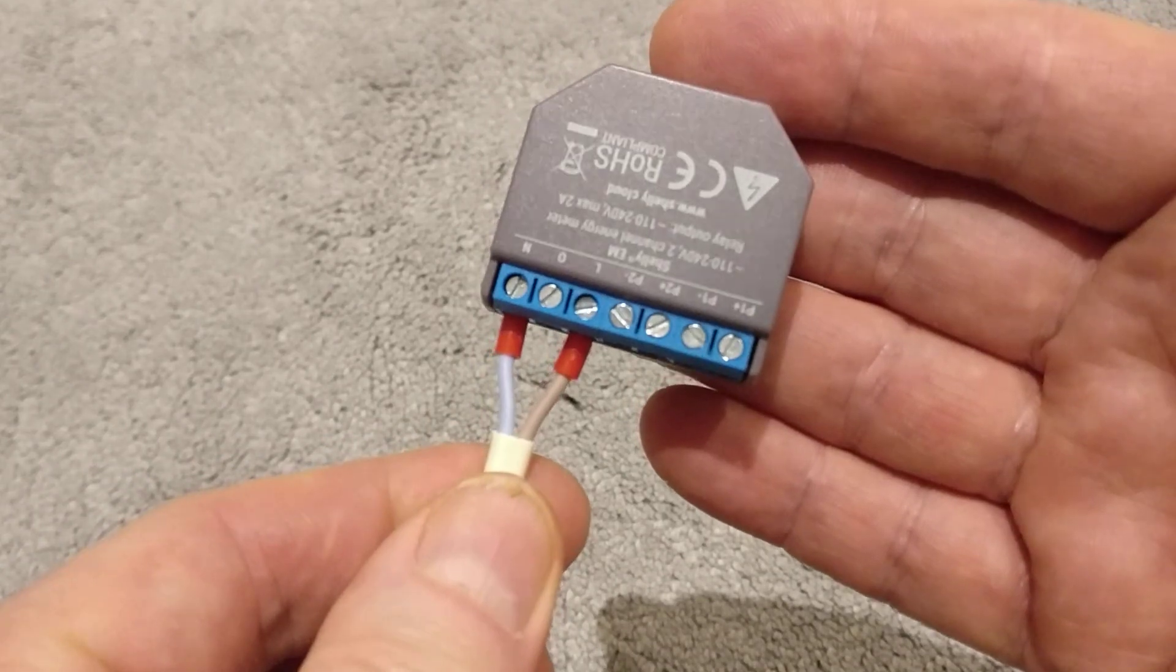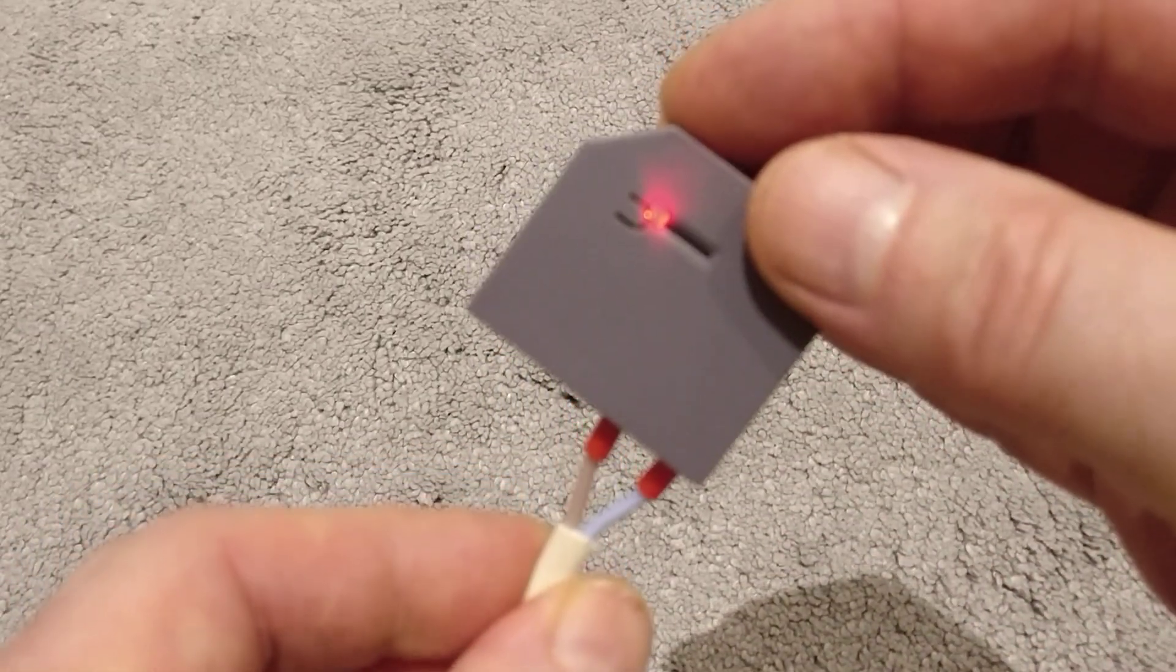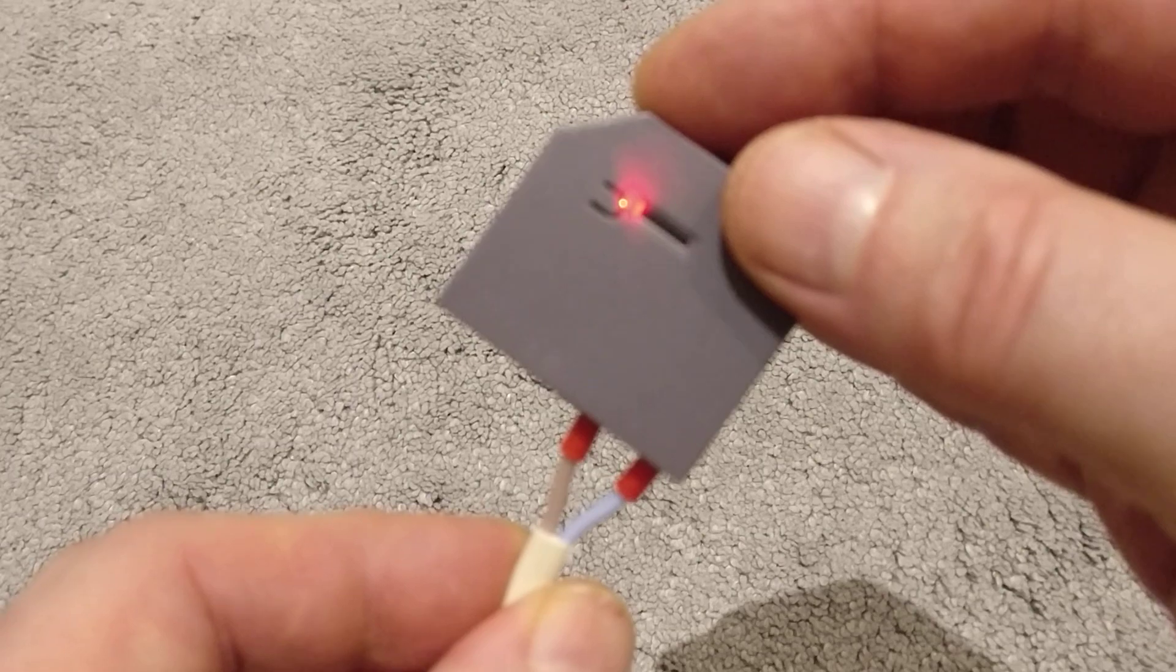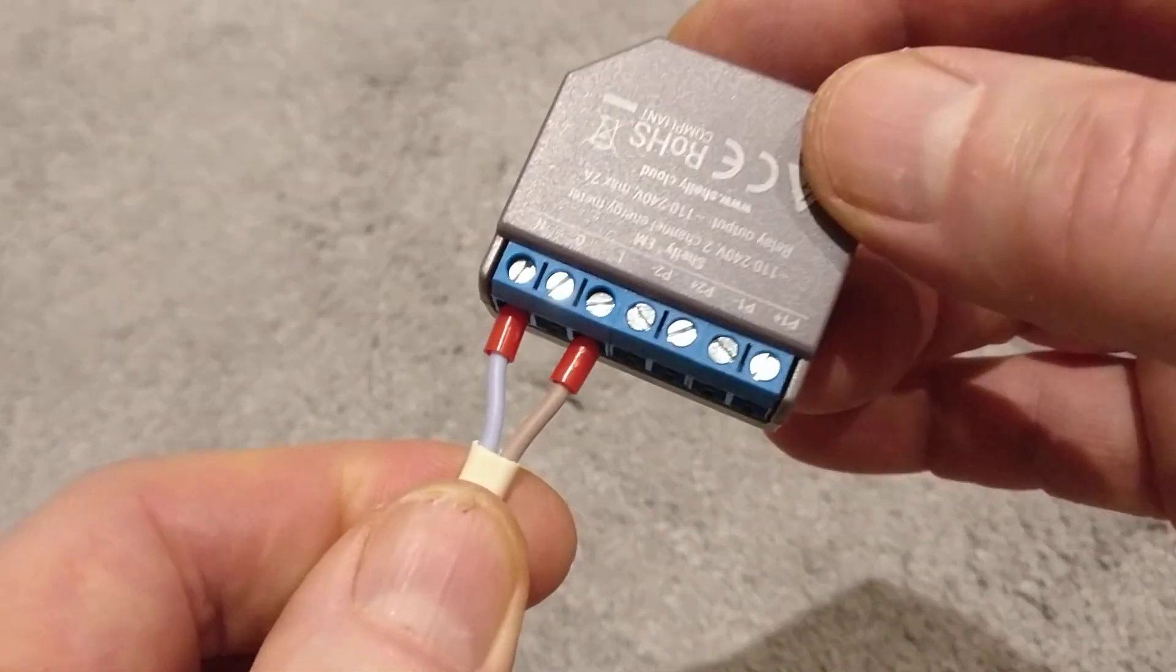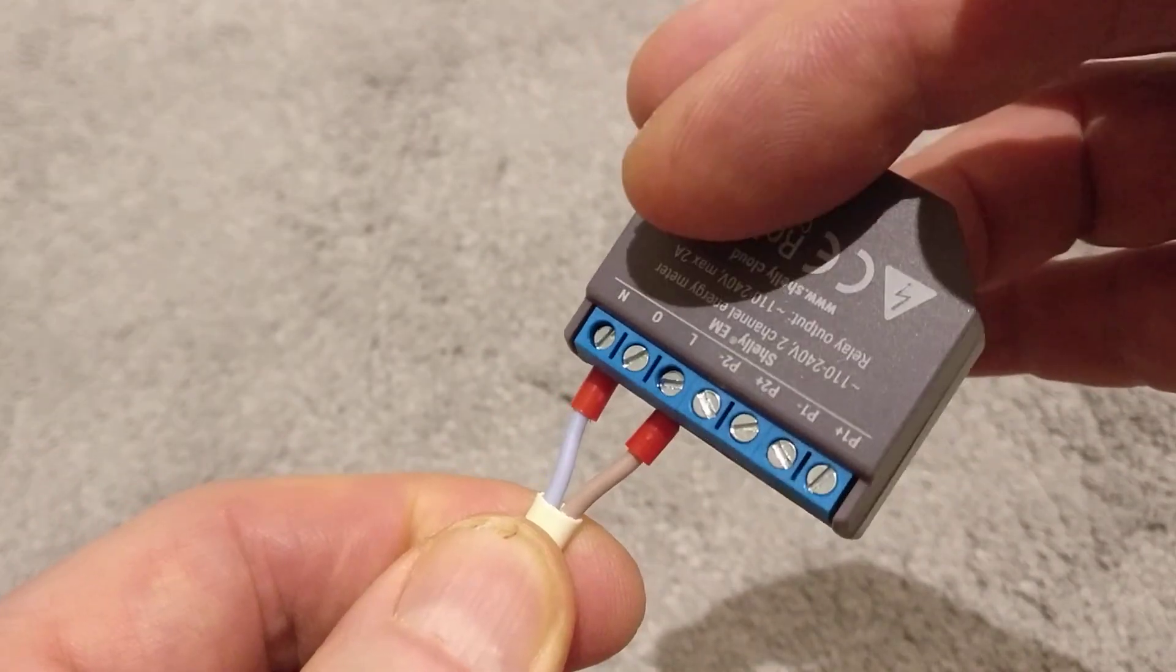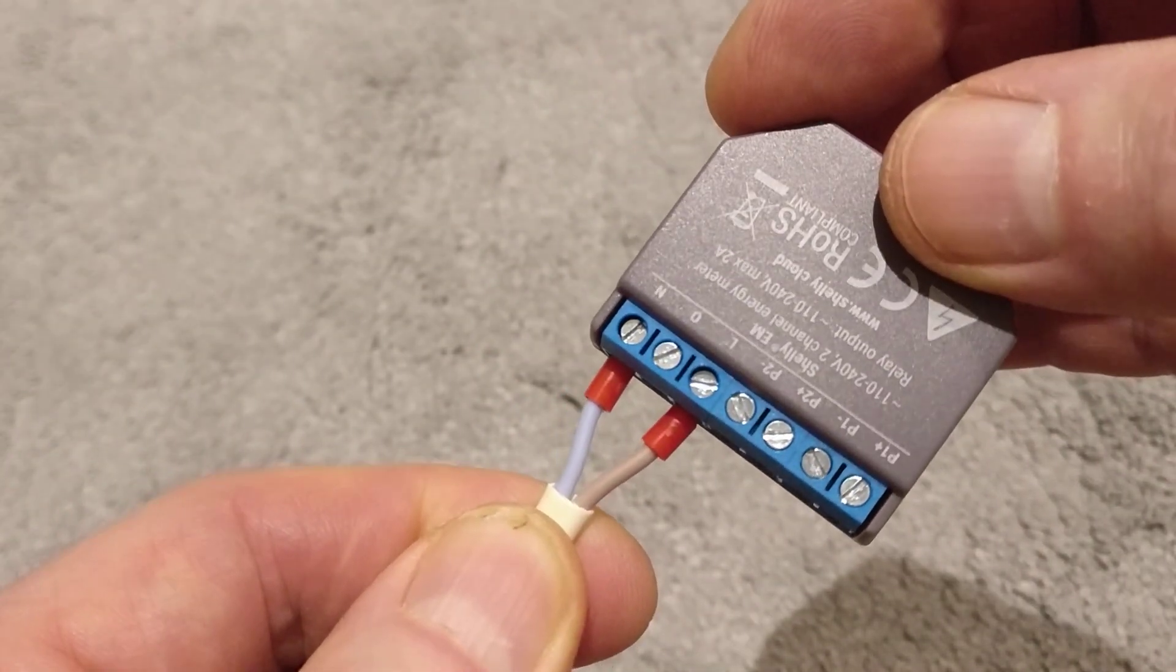The red light shows it's powered on and waiting to connect, or for you to connect to its Wi-Fi. Just one point of caution: this is all live now, so that's 240 volts, so not to touch those screws.